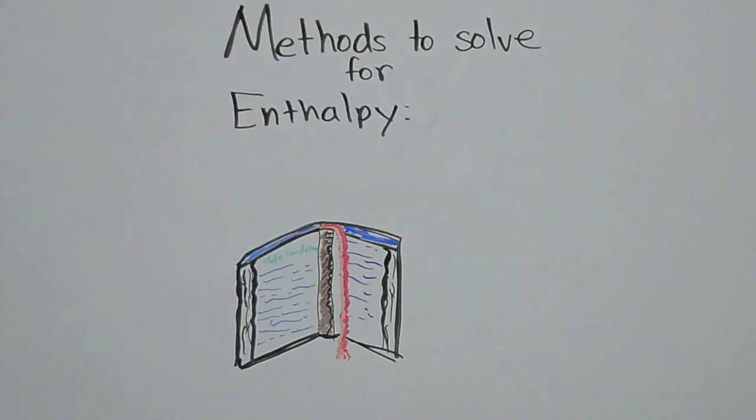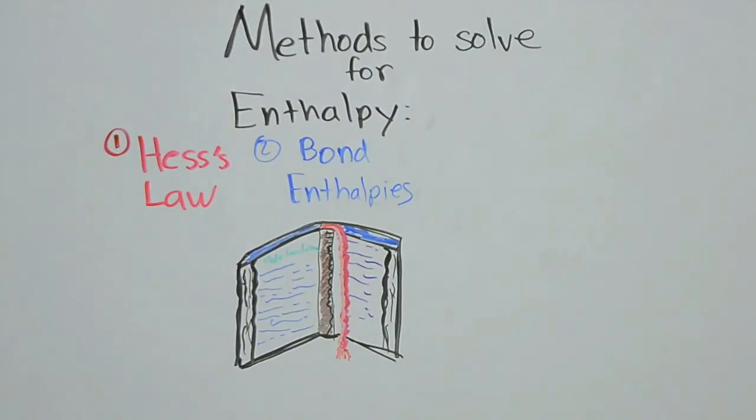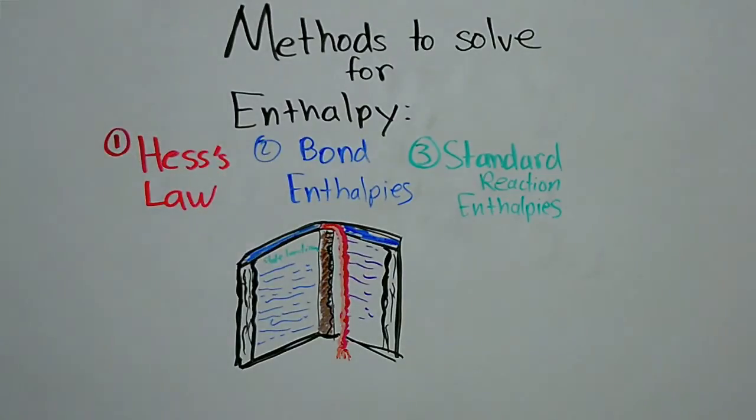Now that we have a solid understanding of the initial final state concept, there are three methods to solve for enthalpy. There is Hess's law, bond enthalpy, and standard reaction enthalpy.